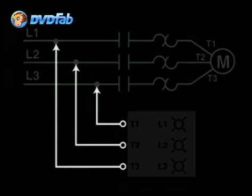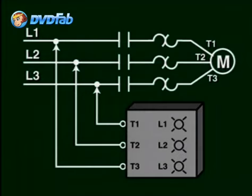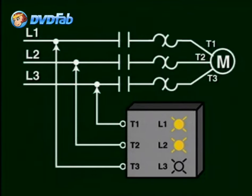Using a phase rotation meter, you could prevent a problem by determining that the voltage phase sequence is correct before the equipment is energized. This tester has three color leads, one for each phase — L1, L2, and L3. When each phase is connected to the correct lead, the appropriate light indicator will turn on. If it doesn't, it means that it is not the appropriate phase.